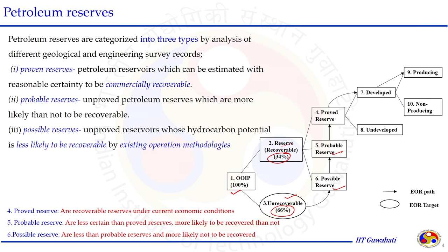Additional things need to be done for possible reserves. Once the recovery process of the hydrocarbon fluid is estimated, the field is developed. Fields can be classified as developed or under development, and the developed field's production is classified as producing or non-producing. The other path is the unrecoverable hydrocarbon, which is the target for EOR or tertiary recovery processes, where specific types of methodology or technique are adopted to recover the unrecoverable hydrocarbon from the reservoir.